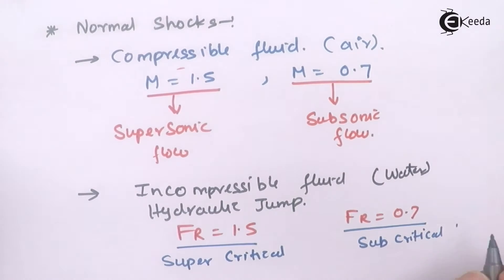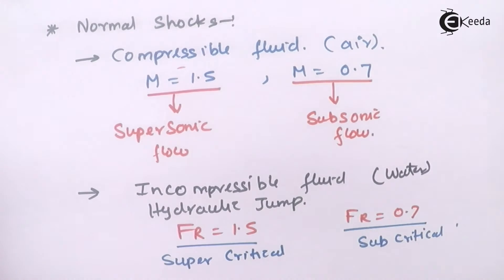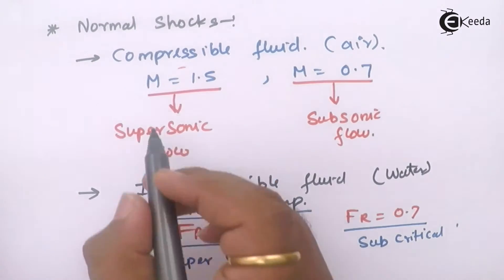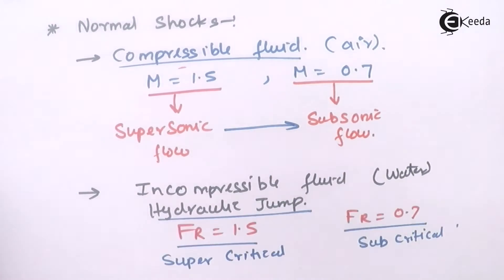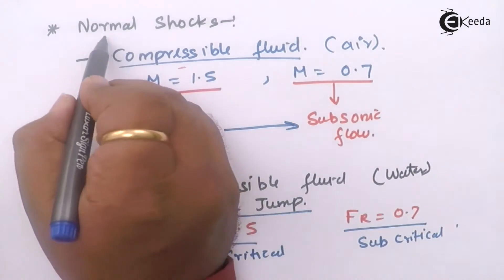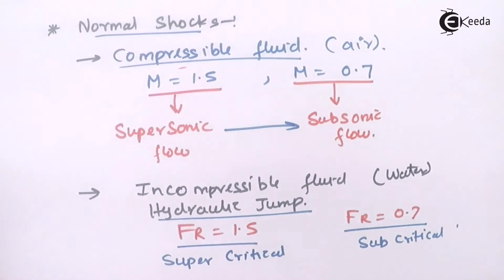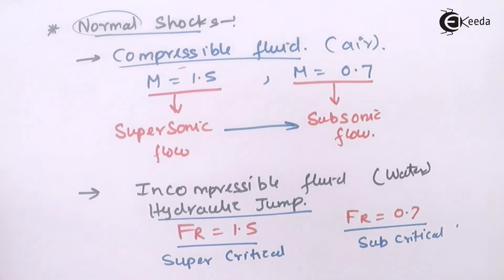So when an incompressible fluid goes from a supercritical flow to a subcritical flow, there is a jump in the level of the liquid — that jump is called the hydraulic jump. Similarly, in a compressible fluid when the fluid flows from supersonic flow directly to subsonic flow, instead of a jump in liquid level, there is a creation of a shock wave. That shock wave is called a normal shock, because the direction of the shock is perpendicular to the direction of the flow.